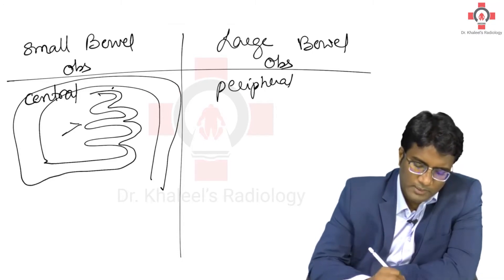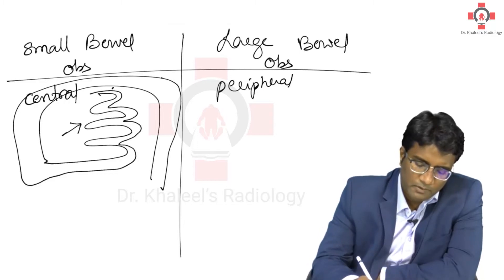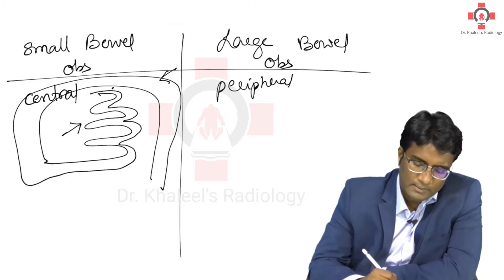If central bowel loops are dilated, it is small bowel obstruction. If peripheral bowel loops are dilated, that is large bowel obstruction.